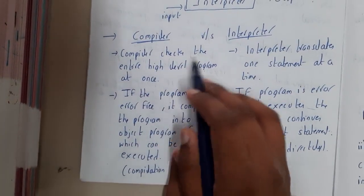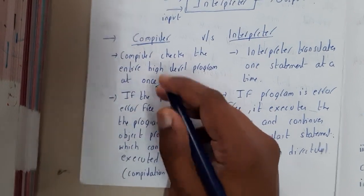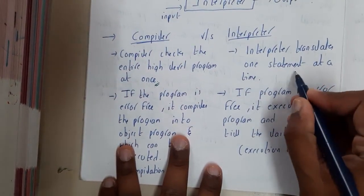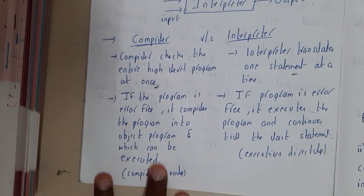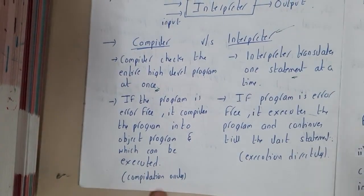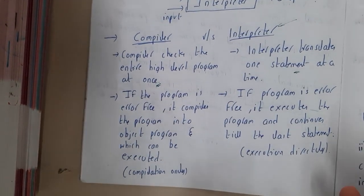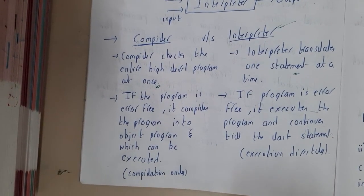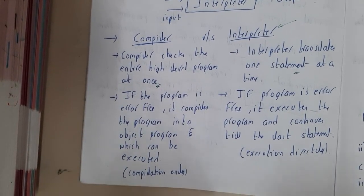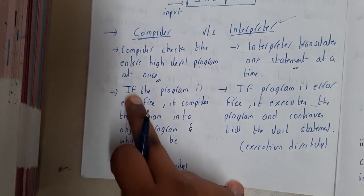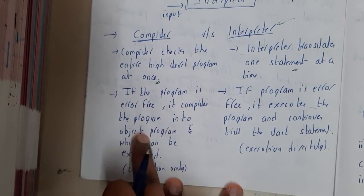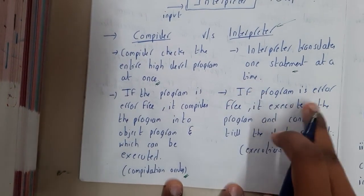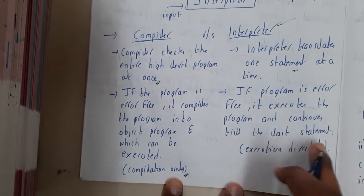Now let us discuss the differences between the compiler and the interpreter. The compiler checks the entire higher-level program at once — it takes the whole program and starts compiling. The interpreter translates statement by statement, line by line. The best example of an interpreter is Python. When using Visual Studio, pressing Shift+Enter automatically executes that particular line. If a program is error-free, the compiler compiles it into object code that can be executed.